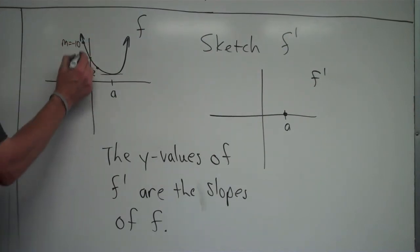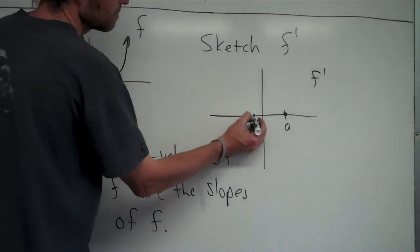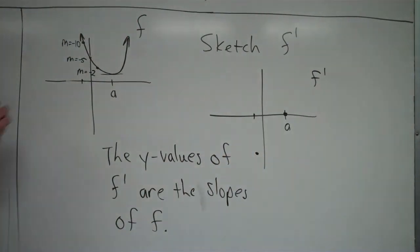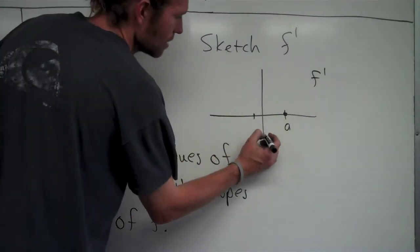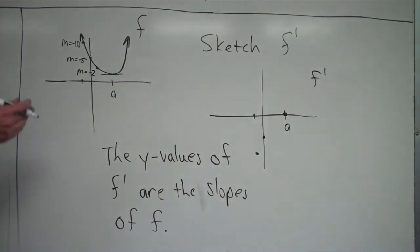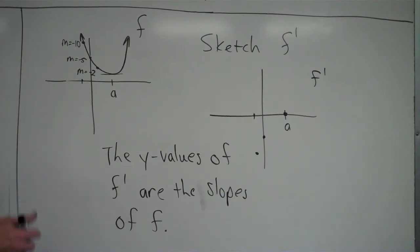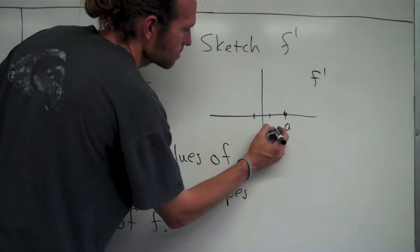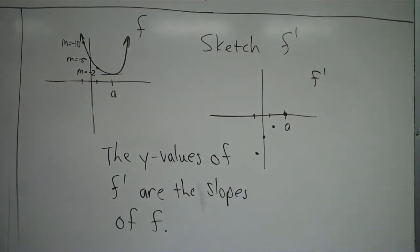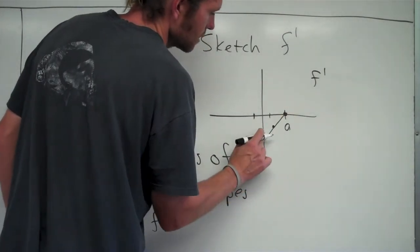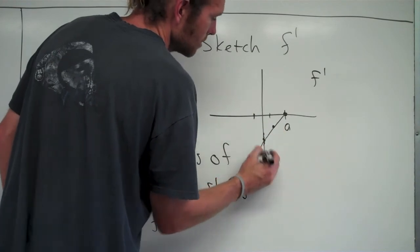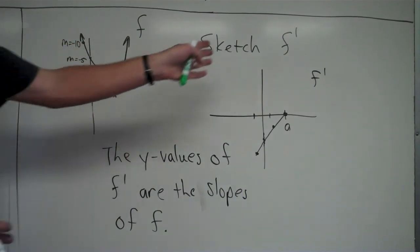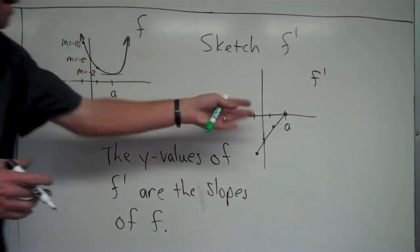At whatever x-value the slope was negative 10, the y-value on f prime should be negative 10 — somewhere down here. At x equals 0, if the slope is negative 5, then the y-value of f prime should be negative 5. And at the x-value where the slope was negative 2, the y-value on f prime should also be negative 2. If I connect all of these points, I get something like this — it falls along that curve. The key connection: at any particular x-value, whatever the slope of f is, that should be the y-value on f prime.